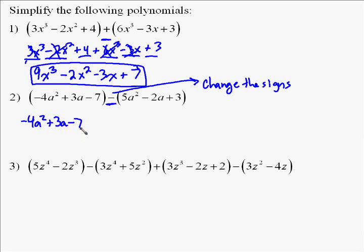Okay, so for the first one, there is nothing outside, so we just write it back down. Negative 4a squared plus 3a minus 7. But with that minus sign, we go to each term and we change the sign. So the positive 5a squared becomes a negative 5a squared. The negative 2a becomes a positive 2a. Positive 3 becomes negative 3.